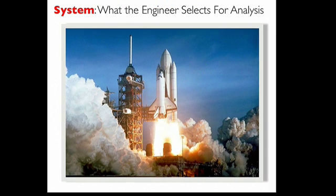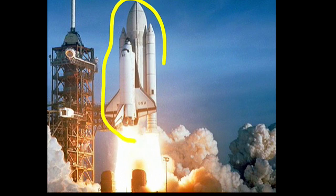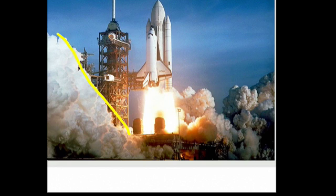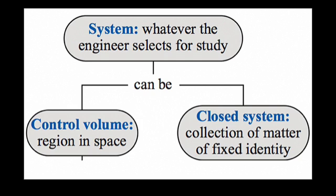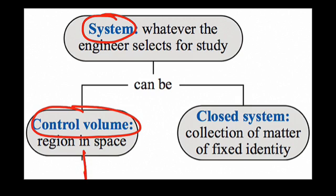A system is defined as whatever the engineer selects for analysis. For example, I can select the nozzle of a rocket, the space shuttle plus its booster rockets, or the exhaust plume for analysis. There are exactly two ways to select systems. Method one is the control volume approach, where we select a region in space. Method two is the closed system approach, where we select matter of fixed identity.